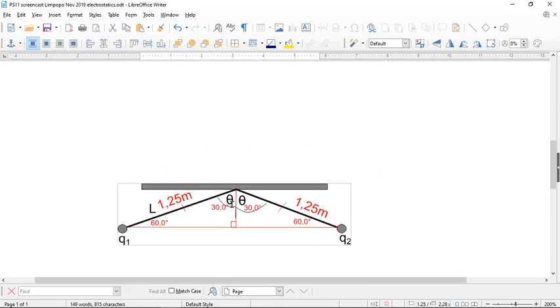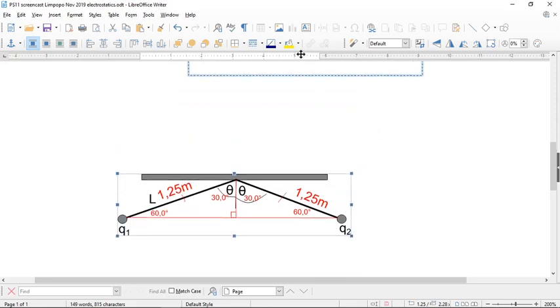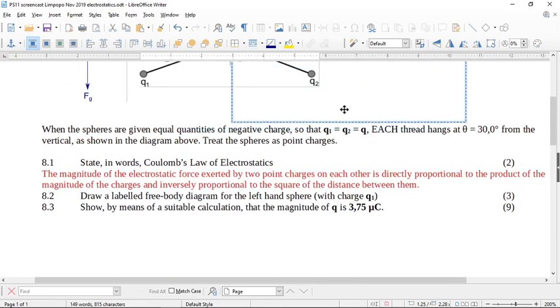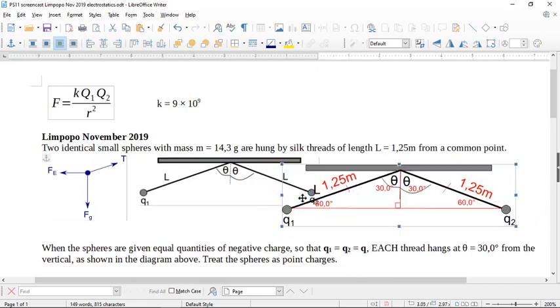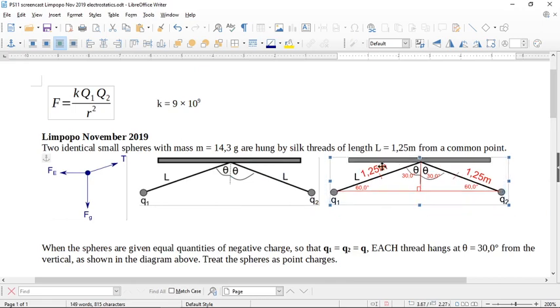So I have done this earlier. And we can have a look at what information we can use to put on this diagram here. Okay, the first thing that it tells you is that the string is 1.25 meters. So you write on here 1.25 meters, 1.25 meters.